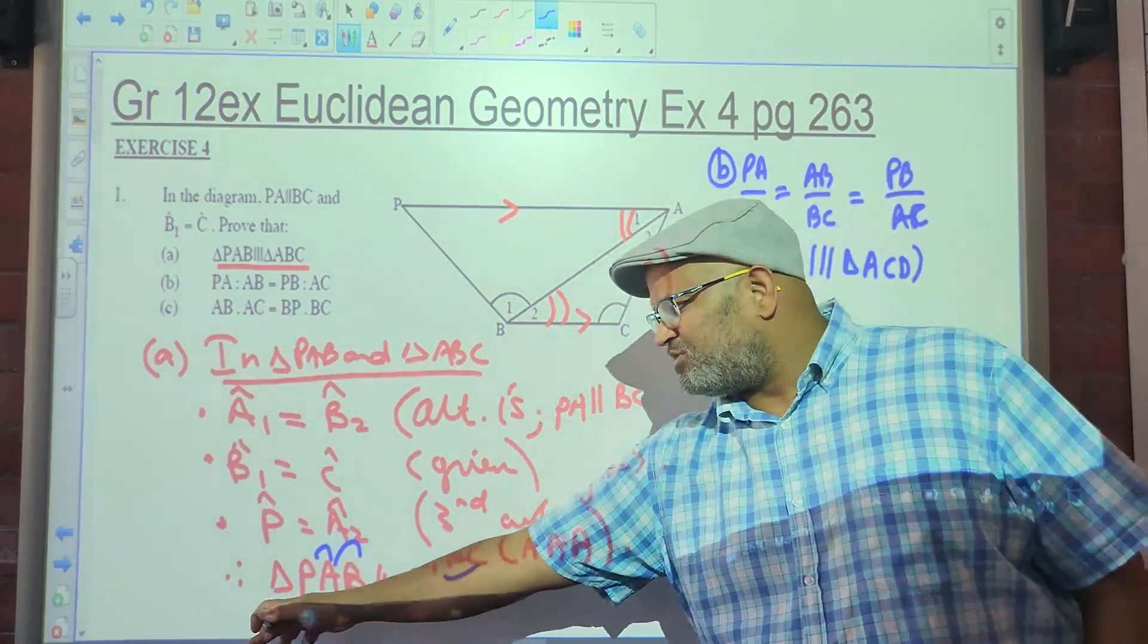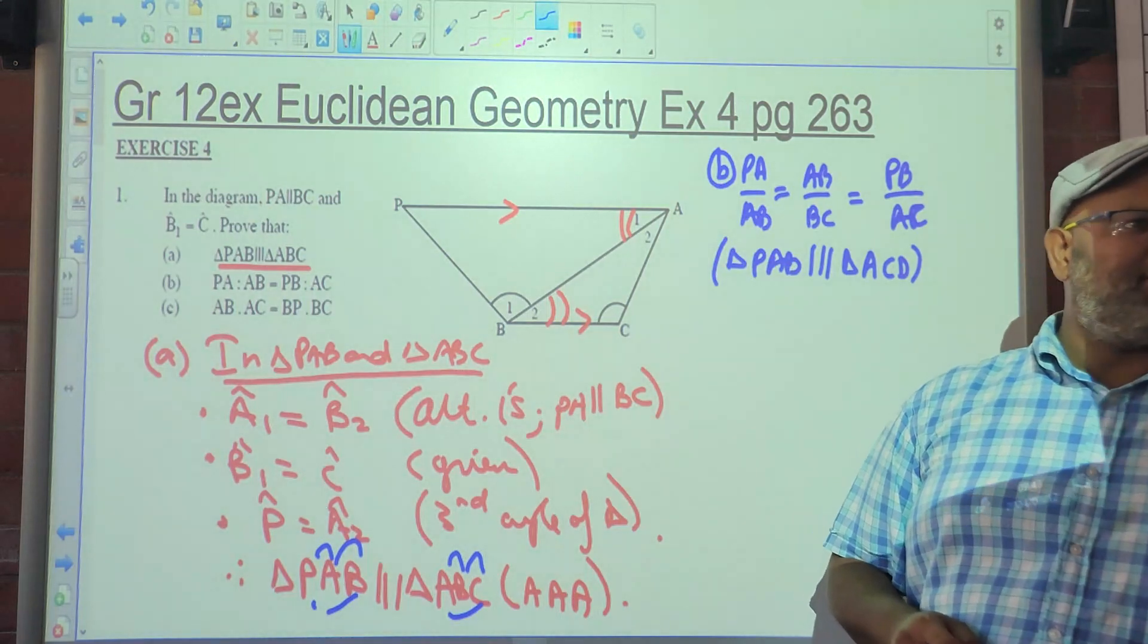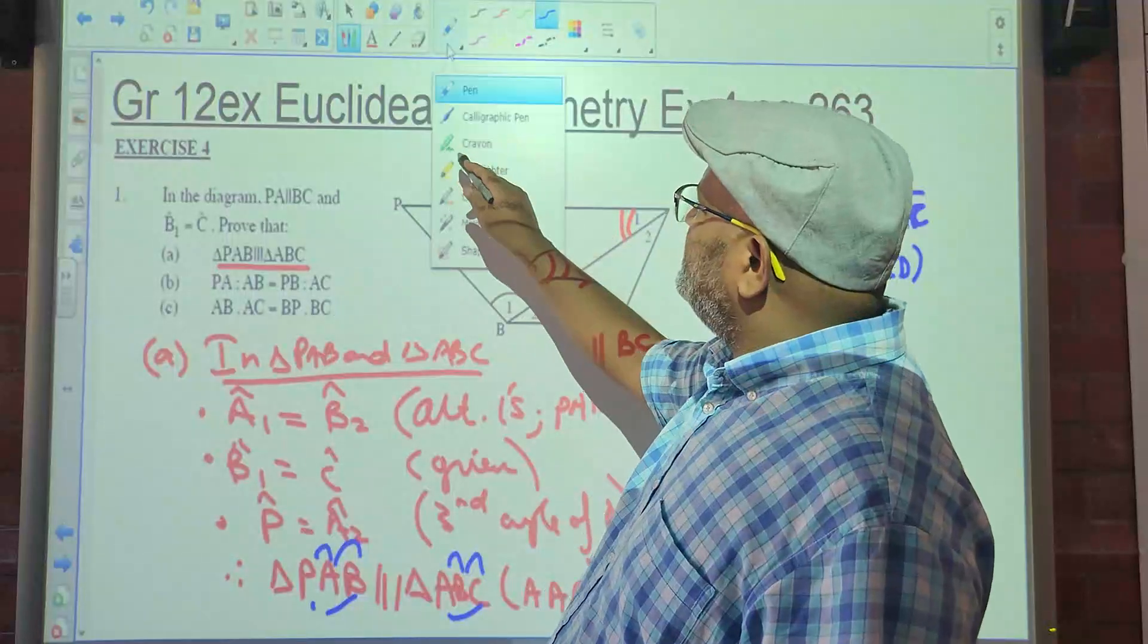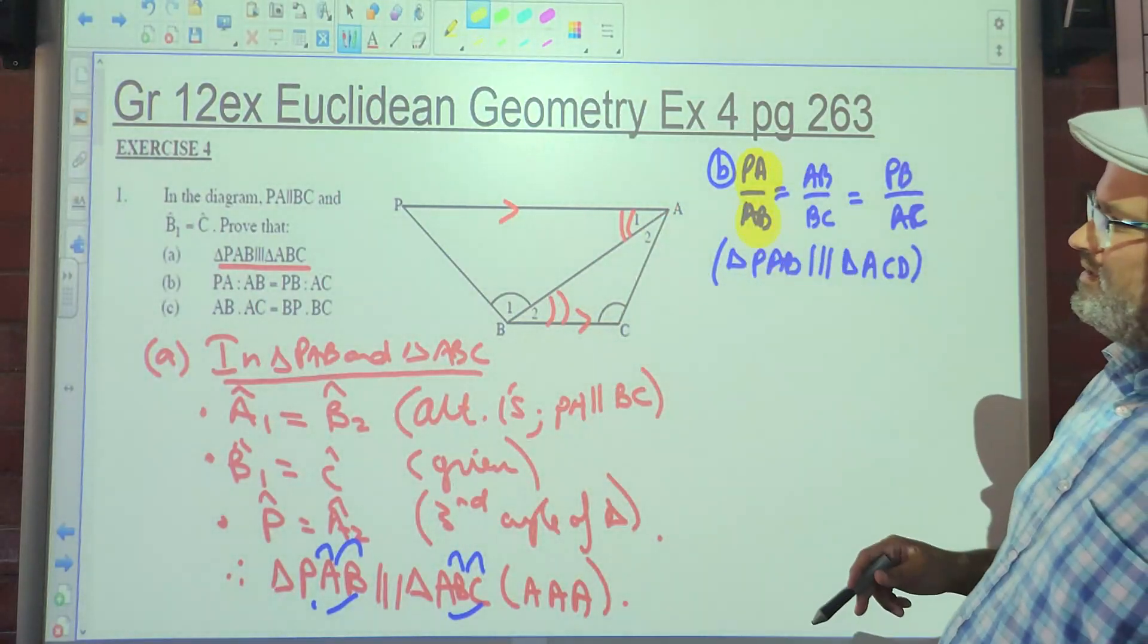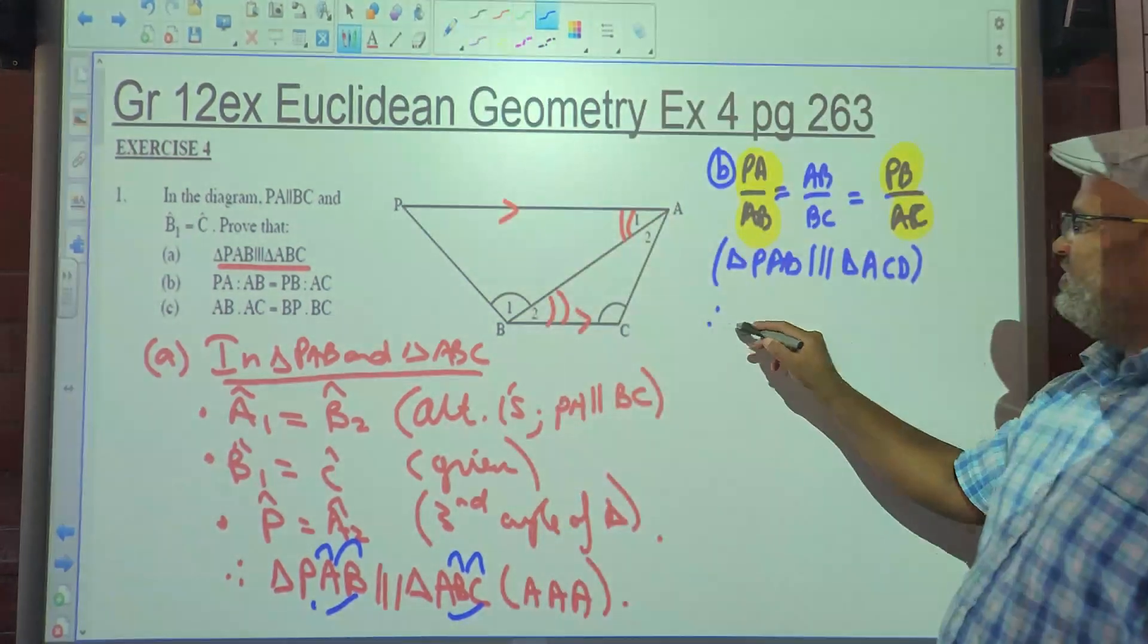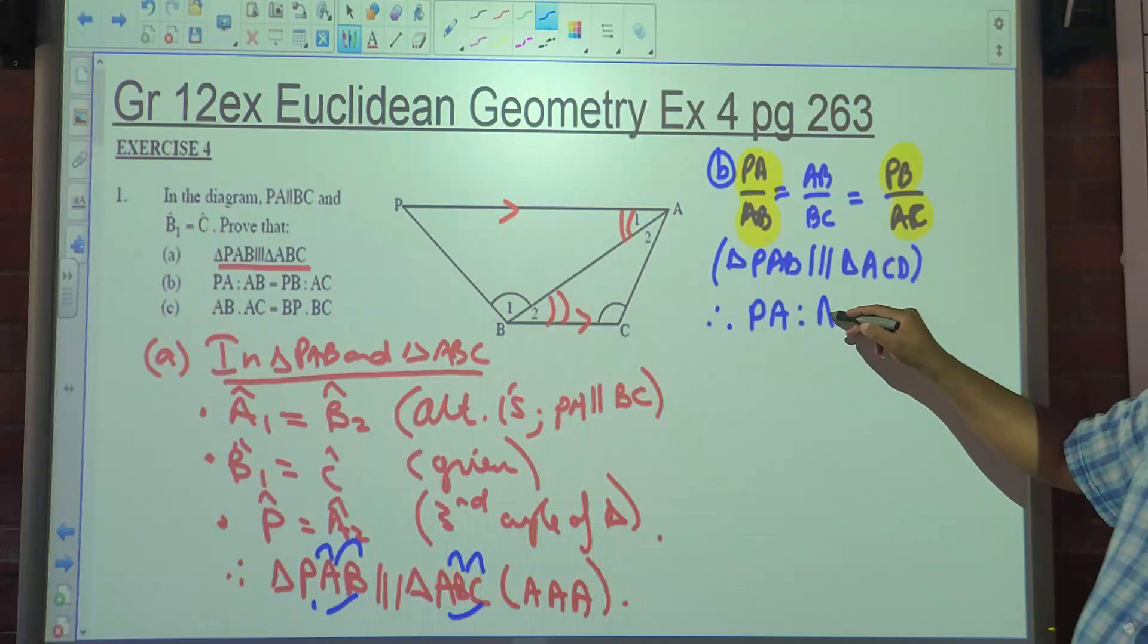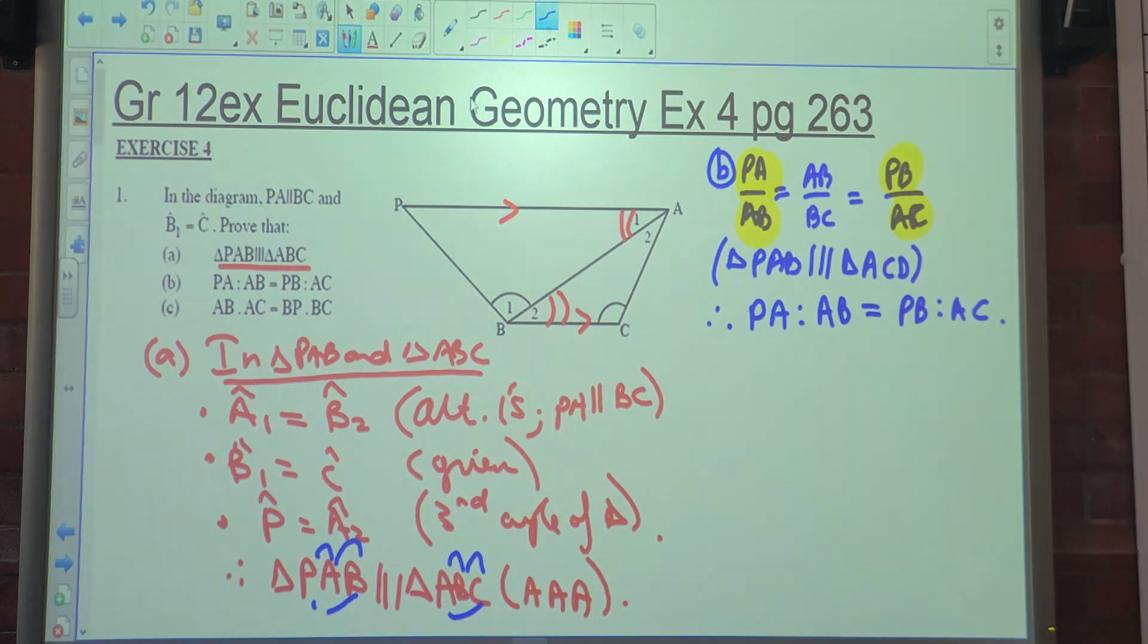And again, if you didn't manage to prove this here, you can still state this. So what do they want? They want PA, AB, PB, and AC. Can you see that? So what do I say? Therefore, I can just conclude. Therefore PA is to AB as PB is to AC. I can't believe it's so easy. That's already at least seven marks here, six or seven marks. It's easy marks, you just need to practice. That's it.